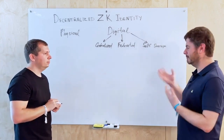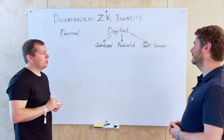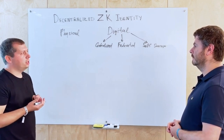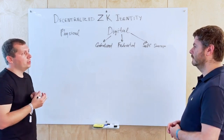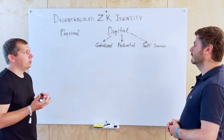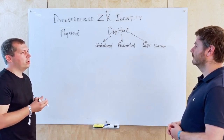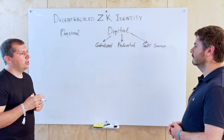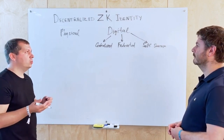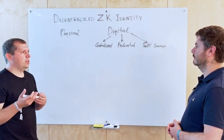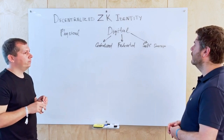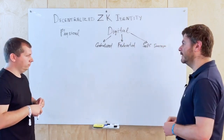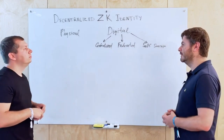For decentralized identity, the user is at the center. They receive identity claims, store them in their own wallet, and can share them whenever required — to access something or publish content. It seems like self-sovereign identity combines the convenience of digital identity with the properties of physical identities — the best of both worlds.